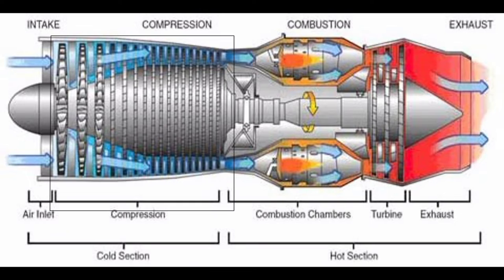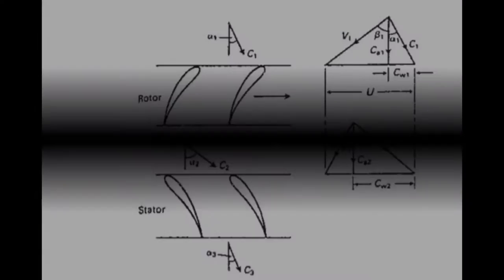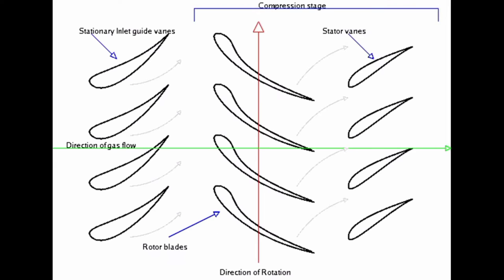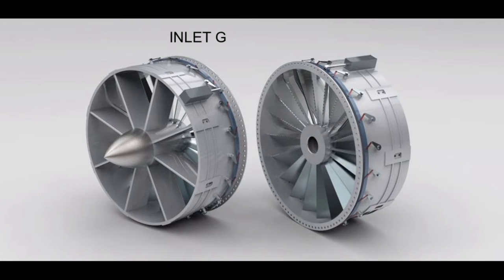These compressors consist of several stages; the number of stages is dependent on the pressure ratio. Each stage consists of several vanes that have an aerodynamic shape. The first row of stators is called inlet guide vanes, which in some engines are fixed and in some engines are variable.